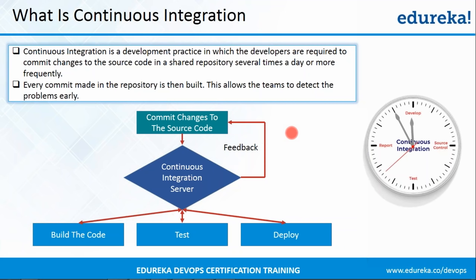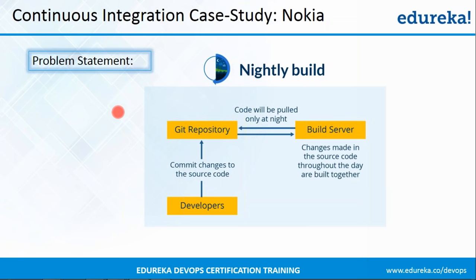We'll see the importance of continuous integration with the help of a case study of Nokia. Nokia adopted a process called nightly build, which can be considered a predecessor to continuous integration. Developers were committing changes to the source code in a shared repository, and then in the night a build server would pull the shared repository for changes and prepare a build. Whatever commits are made throughout the day are compiled in the night. This process is better than writing the entire source code first and then compiling, but if there's any bug in the code, developers have to check all the commits made throughout the day.